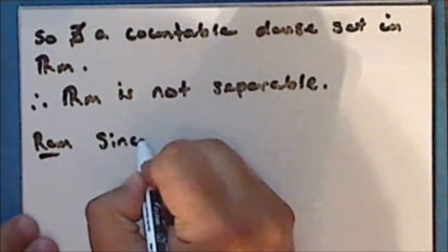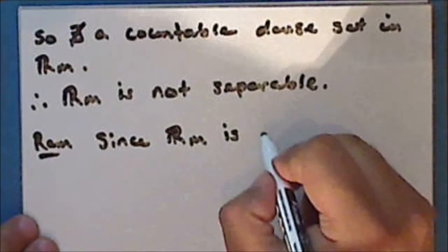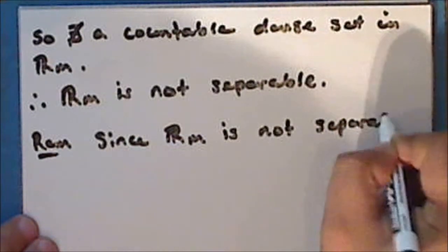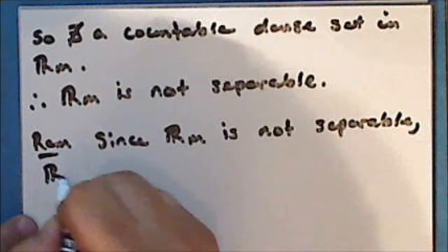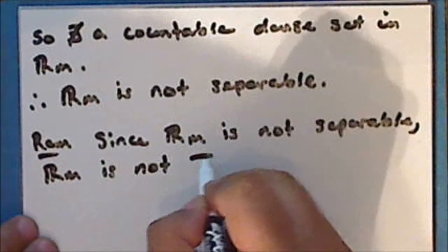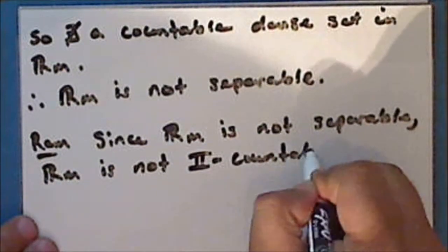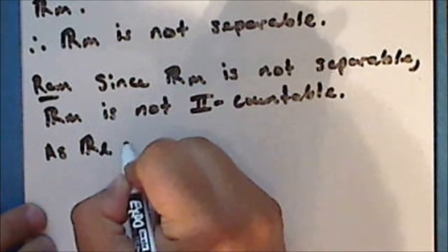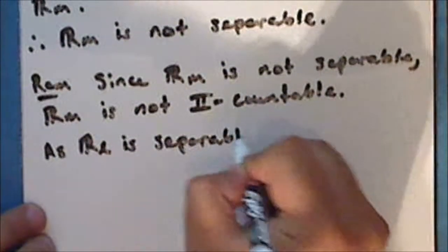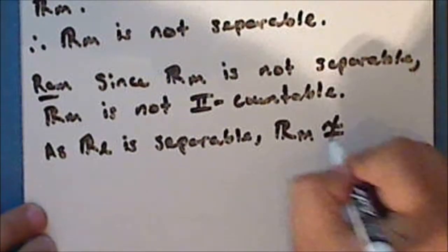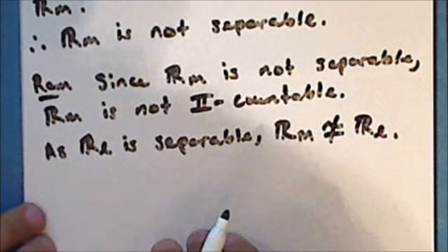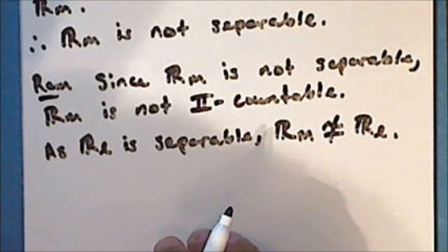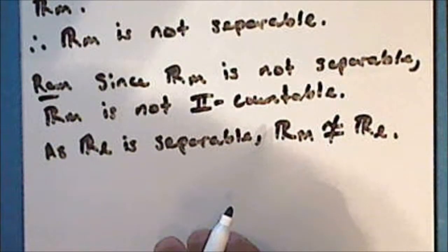Now since the Michael line is not separable, the Michael line is not second countable. And as the Sorgenfrey line is separable, the Michael line is not homeomorphic to the Sorgenfrey line. We will end here for today. Next time we will continue to look at the properties of the real line, the Sorgenfrey line, and the Michael line, and we will look at an additional exotic topology on the reals called the K topology.